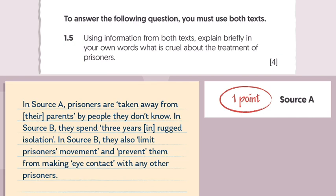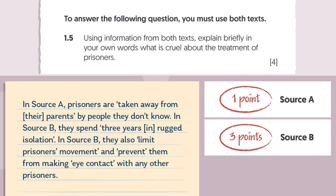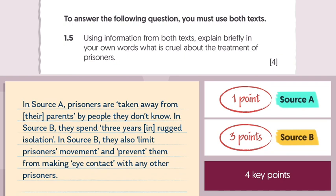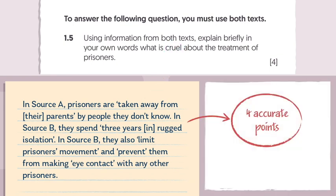As you can see, this answer has used one point from Source A and three from Source B, and has accurately selected four key points from the two texts to answer the question. All of the evidence shows the treatment of prisoners as cruel, a keyword from the question. It's made four accurate points for four marks.